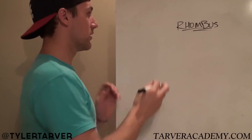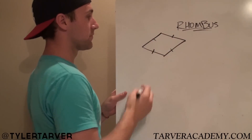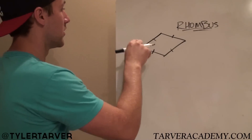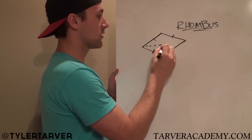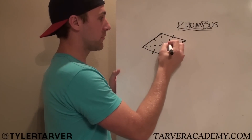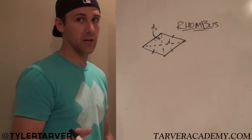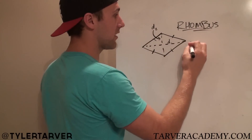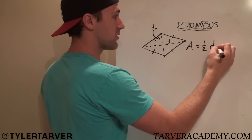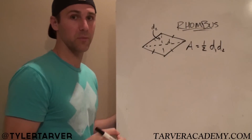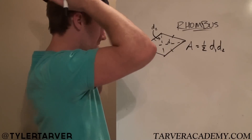We're gonna learn how to find the area of one. All these sides are equal. Diagonals go from one angle to the other across the shape. Name one of them diagonal one, and the other diagonal two — doesn't matter which one. The formula for area of a rhombus is one-half times diagonal one times diagonal two. It's the same formula used to find the area of a kite.